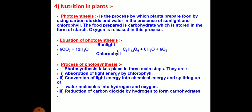Photosynthesis takes place in three main steps. First, absorption of light energy by the chlorophyll present in the leaf. Second, this absorbed light energy is converted into chemical energy and causes splitting of water molecules into hydrogen and oxygen. Third, reduction of carbon dioxide by hydrogen to form carbohydrates.